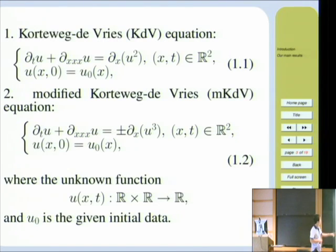Here, u is an unknown function that depends on the space variable x and the time variable t. We only consider the real line case, meaning x belongs to R. We can also consider the boundary value problem, like on the torus.